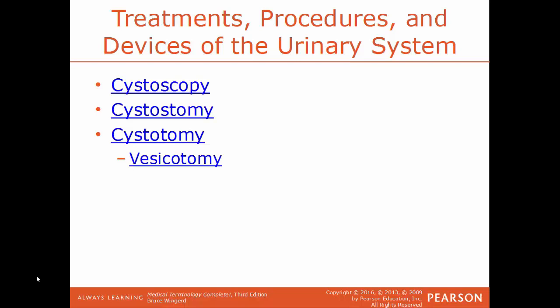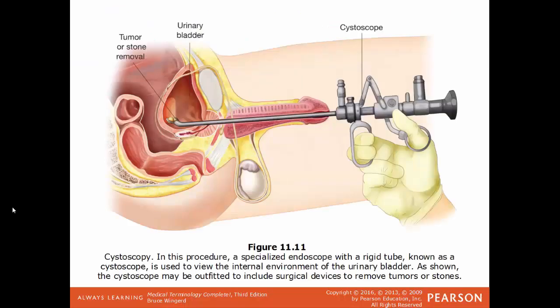In this illustration we have an example of cystoscopy — a visual exam of the urinary bladder. A cystoscope is inserted into the urethra, in this case the end of the penis for a male, and extends all the way into the bladder. The end can also be used to remove stones or tumors, or just to visualize the inside of the bladder.